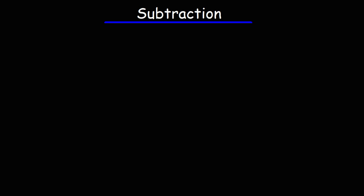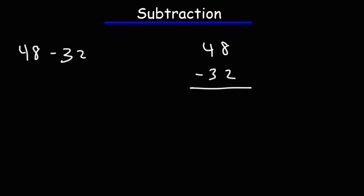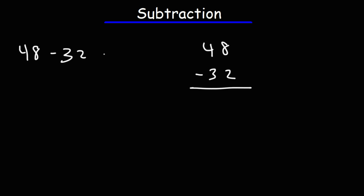In this lesson, we're going to focus on subtraction. Let's say we have 48 minus 32, and we want to subtract the two numbers. The first thing we need to do is stack the two numbers, and the way we write it matters. 48 minus 32 should be written with 48 on top, because this will give us positive 16.